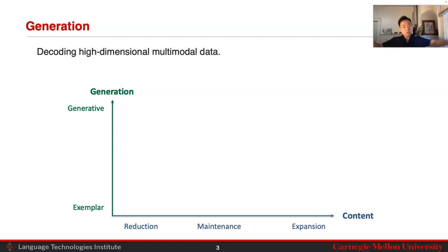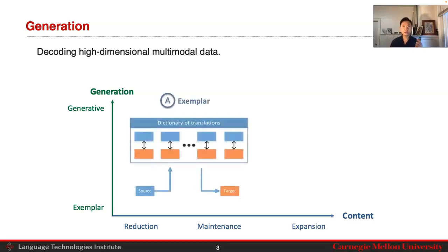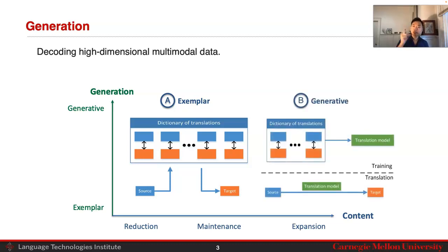In addition to the dimension of content — either reducing, maintaining, or expanding content — the other axis we're going to look at is how we actually generate our data, because it's very difficult to decode high-dimensional multimodal data. The two main categories are generating through exemplars, where we have a dictionary view of transformations and try to retrieve something similar from this dictionary, or through generation, where we use this dictionary of translations to learn a fully generative model.